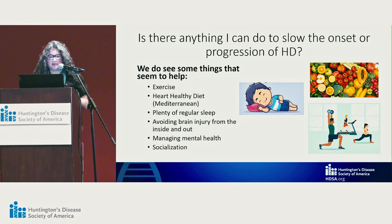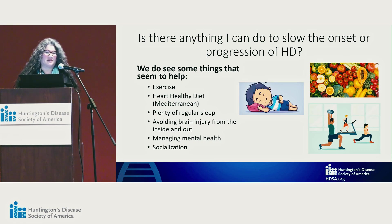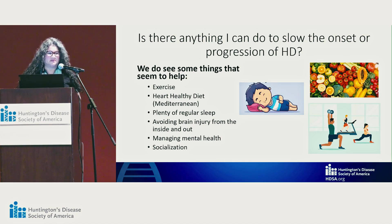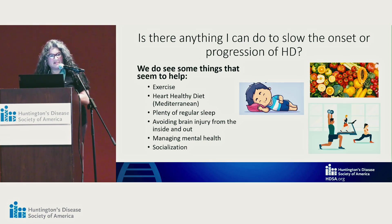Chris is going to talk about genetic modifiers with Huntington's disease, which are fascinating. But people also ask me: what can I do to slow the progression of this disease? Number one thing we've seen over the years is exercise — regular exercise. You don't have to become a marathon runner, just getting out and walking and moving every day is great. Eating a heart-healthy diet — what's good for your heart is good for your brain. Dr. Wheelock told me that and I've remembered it ever since.